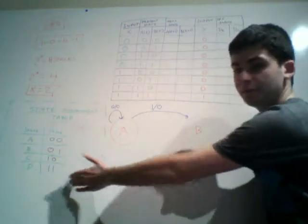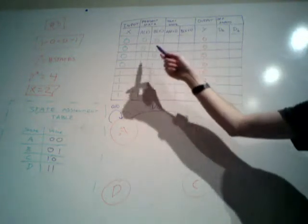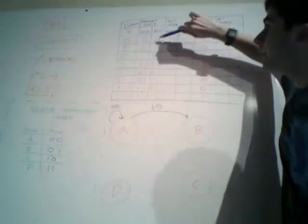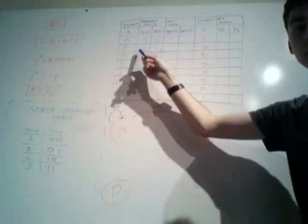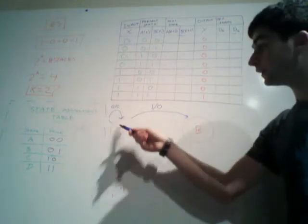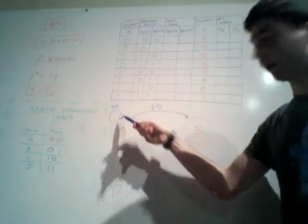Now we need to transfer the state diagram over to the state table using the state assignment table. If we're in state A — that's present state 0,0 — and we've just received a 0, we already said we loop back to state A, which is next state 0,0, and we output a 0.